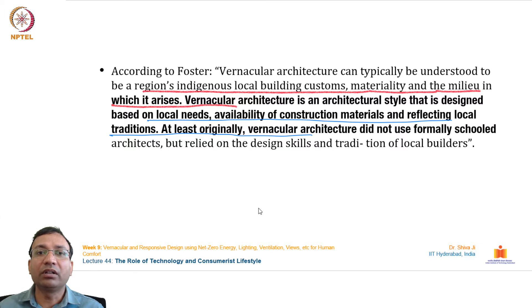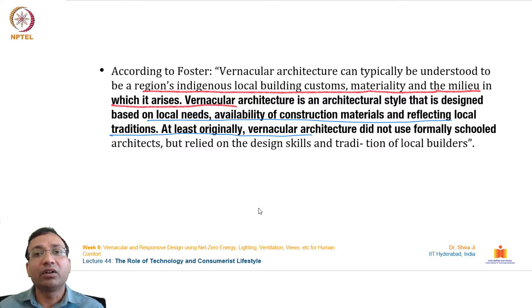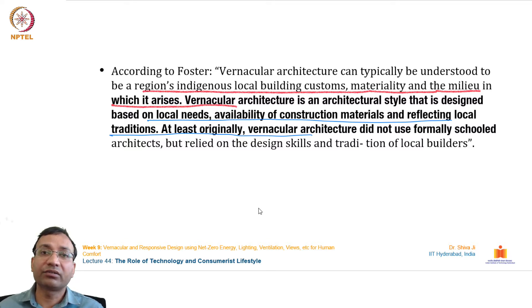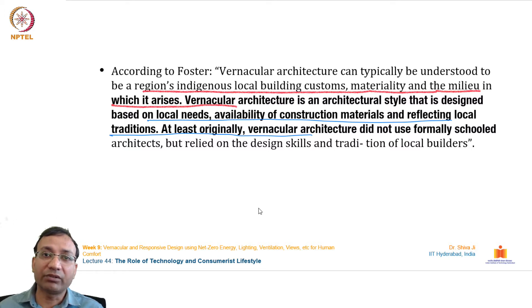Vernacular architecture uses very raw, local, authentic natural materials such as adobe, thatch, bamboo, and stone — whatever can be found in that place. That is why the characteristics and features of vernacular architecture change from place to place, because they are deeply rooted to that particular location. In contrast, today's globalized architecture shows a trend where buildings look almost the same regardless of location.